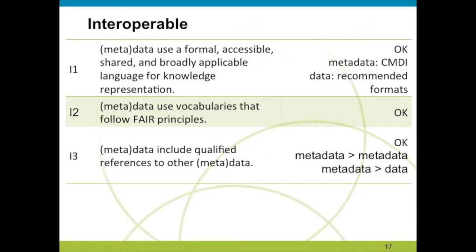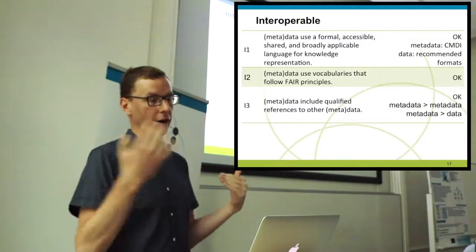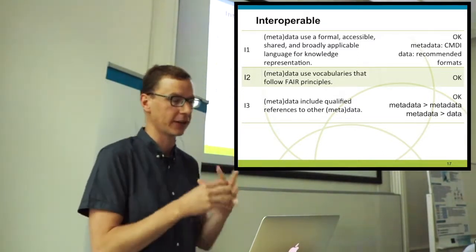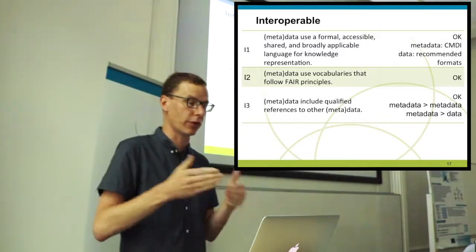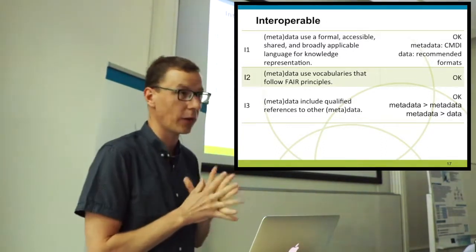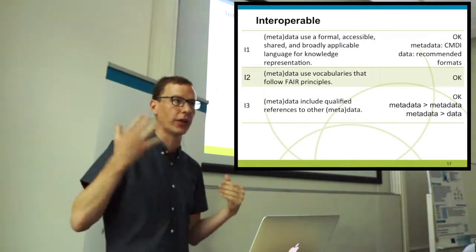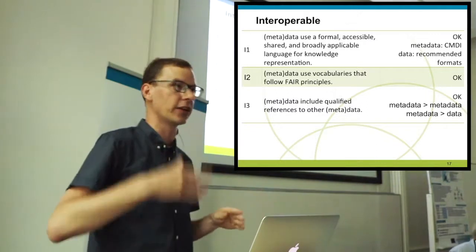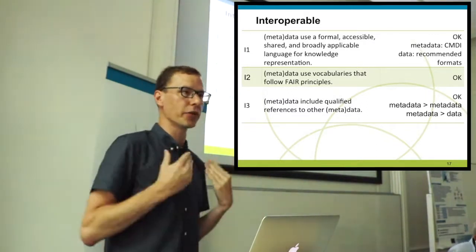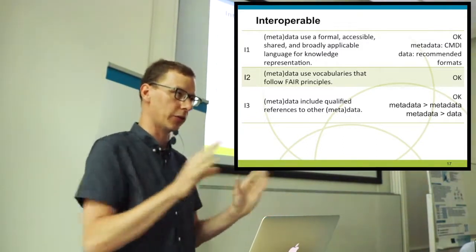Then we come to Interoperability, with three sub-requirements. The first is that metadata uses a formal, accessible, shared, and broadly applicable language for knowledge representation. We're generally in line with that — for metadata we have clearly defined mechanisms with the component metadata approach. For the data there's much more heterogeneity, and we can't control every single data format across one million records, so we try to give best practices and recommend well-documented open standards.